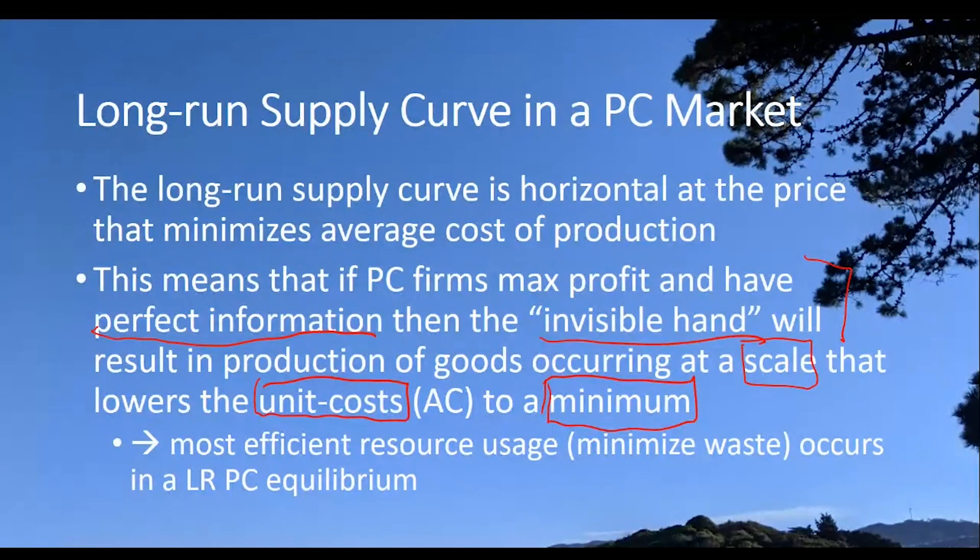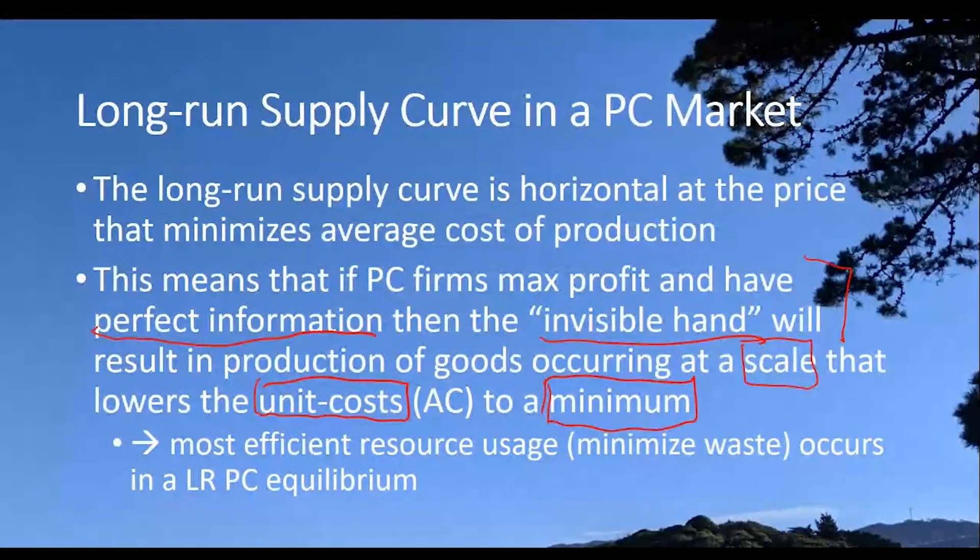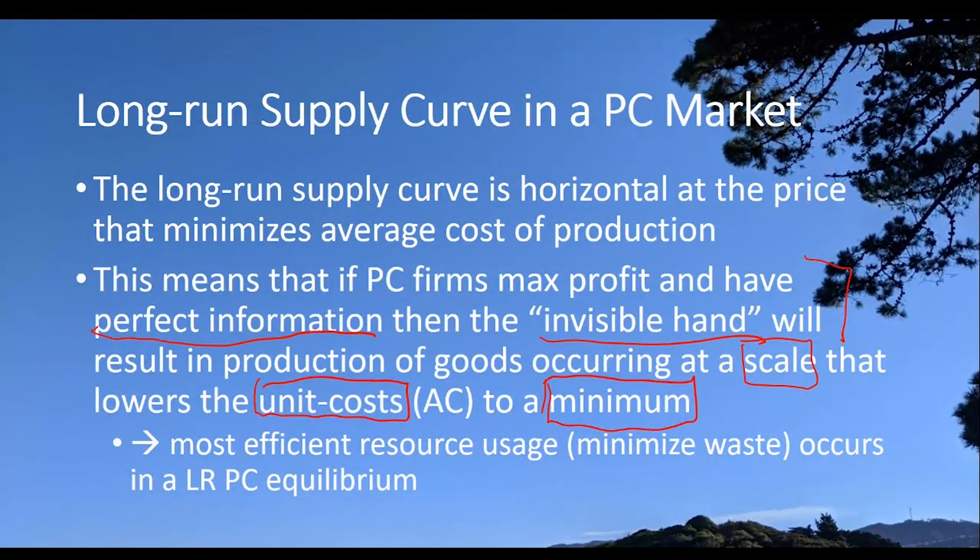And now we can make that distinction. I want to emphasize again, anytime you see an upward sloping, positively sloped supply curve, it means that we're depicting a short run equilibrium in a perfectly competitive market setting. That's where that upward sloping supply curve comes from. If we want to talk about long run and say let's just look at equilibriums that will arise in the long run, then that upward sloping supply curve becomes a horizontal line at the level of minimum average costs of production.